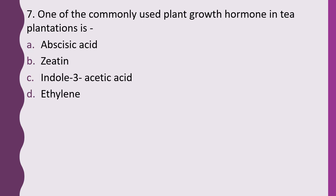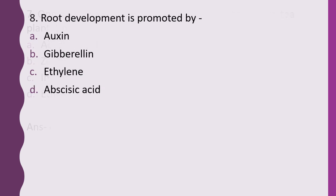Question 7. One of the commonly used plant growth hormones in tea plantations is: abscisic acid, zeatin, indole-3-acetic acid, or ethylene. The correct answer is option C, indole-3-acetic acid. Question 8. Root development is promoted by: auxin, gibberellin, ethylene, or abscisic acid. The correct answer is option A, auxin.